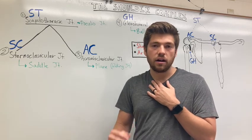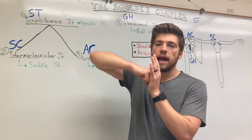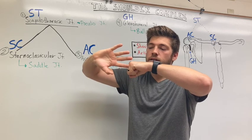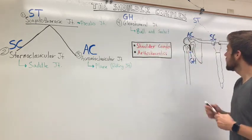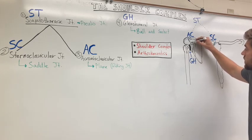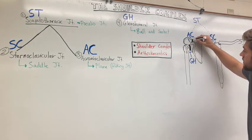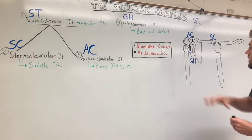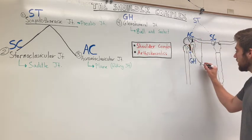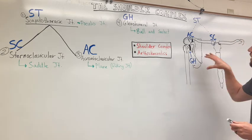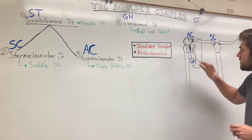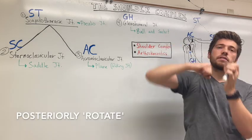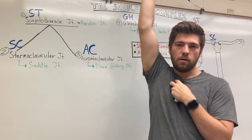The SC joint also moves in the transverse plane and along its own long axis. When the AC joint does upward rotation, it yanks on the conoid ligament, which is off of the coracoid process. That ligament attaches on the back of the clavicle. So when the scapula swings out and rotates, it yanks on the back of the clavicle and posteriorly tilts it. The clavicle posteriorly tilts in order to get our arm all the way above our head.